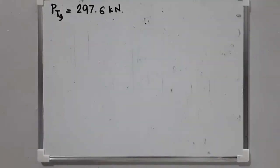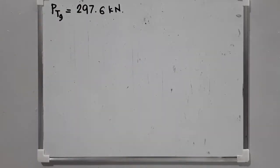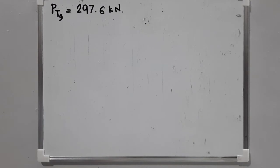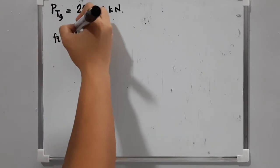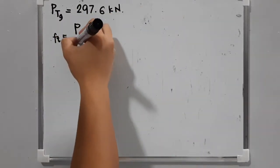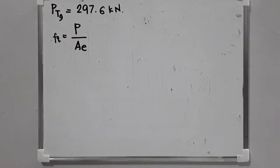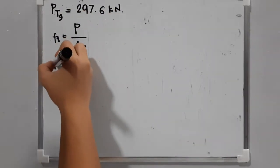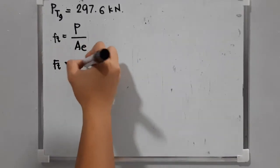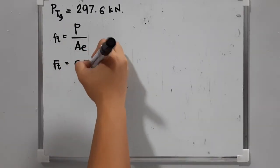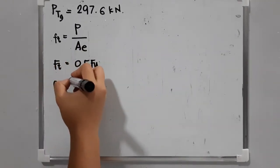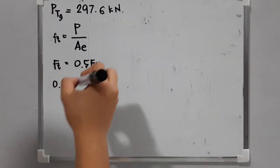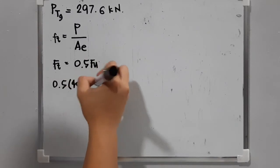Now let's proceed to solving tension on net area. Since we are solving for P, we have actual stress as force over the critical effective net area, equated to the allowable which is 0.5 of the ultimate strength Fu. So that is 0.5 times 400. We need to solve for the effective net area AE.